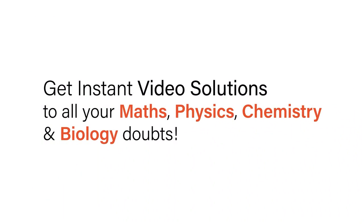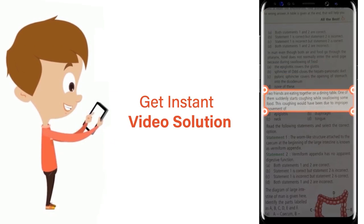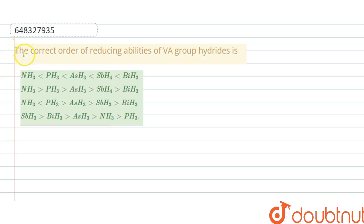With Doubtnut, get instant video solutions to all your math, physics, chemistry, and biology doubts. Just click the image of the question, crop the question, and get instant video solution. The question is: the correct order of reducing abilities of VA group hydrides.